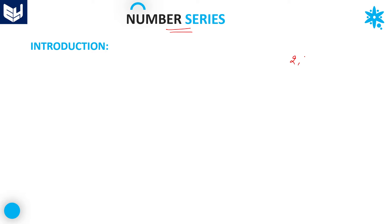Let us take for example: 2, 4, 6, 8 — dash. What will come after this number? Basically, 2, 4, 6, 8 — all these numbers are consecutive even numbers. So the next consecutive even number is 10. So 10 is the answer for this question. This is a basic question I am explaining to give the introduction of number series.